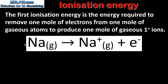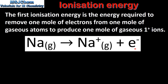This equation shows the first ionization of sodium. In this equation we have one mole of gaseous sodium atoms, one mole of gaseous sodium one positive ions, and one mole of electrons. So the one mole of electrons have been removed from one mole of gaseous sodium atoms to form one mole of gaseous sodium ions with a one positive charge.